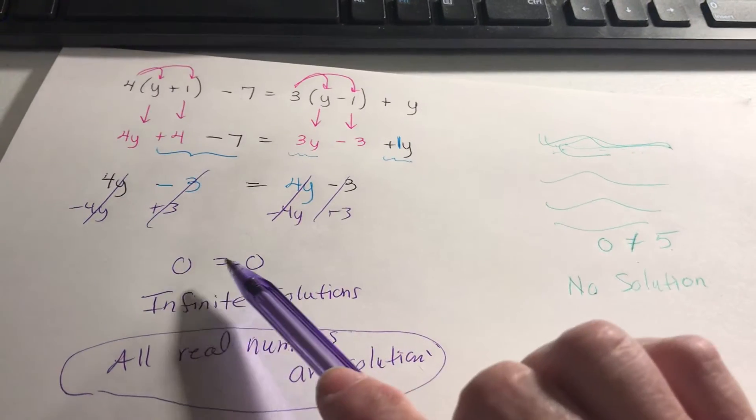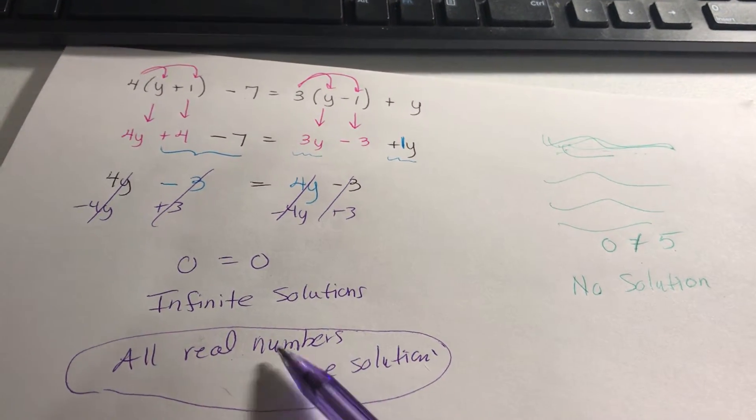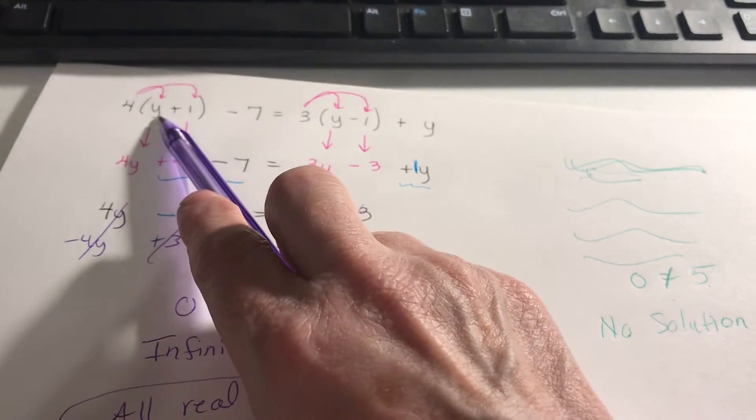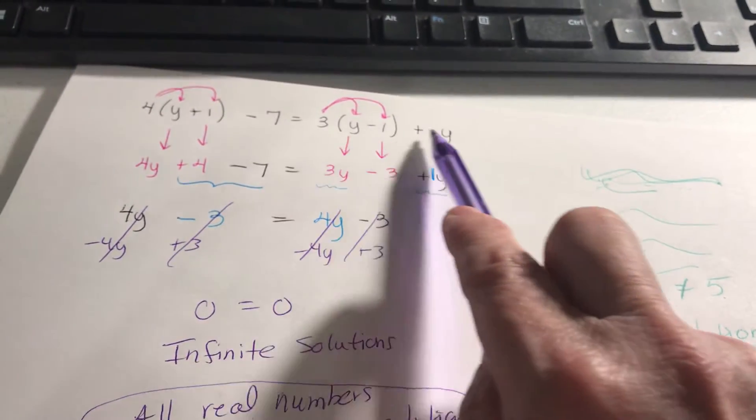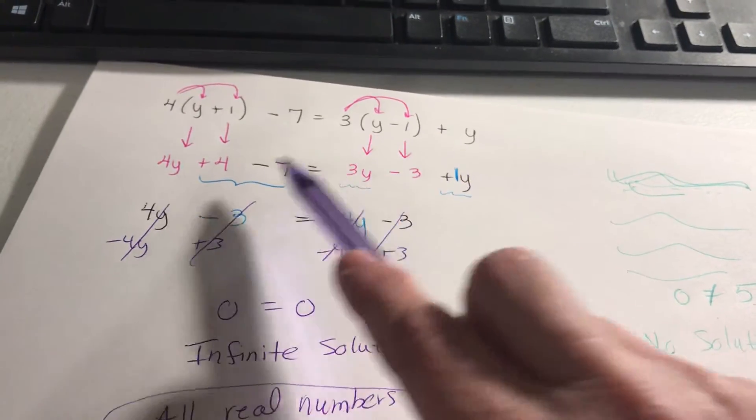So if it cancels out and you get 0 equals 0 it's all real numbers. That means any number that you would stick here, here, and here. When you do the math on the left and you do the math on the right you get the same result.